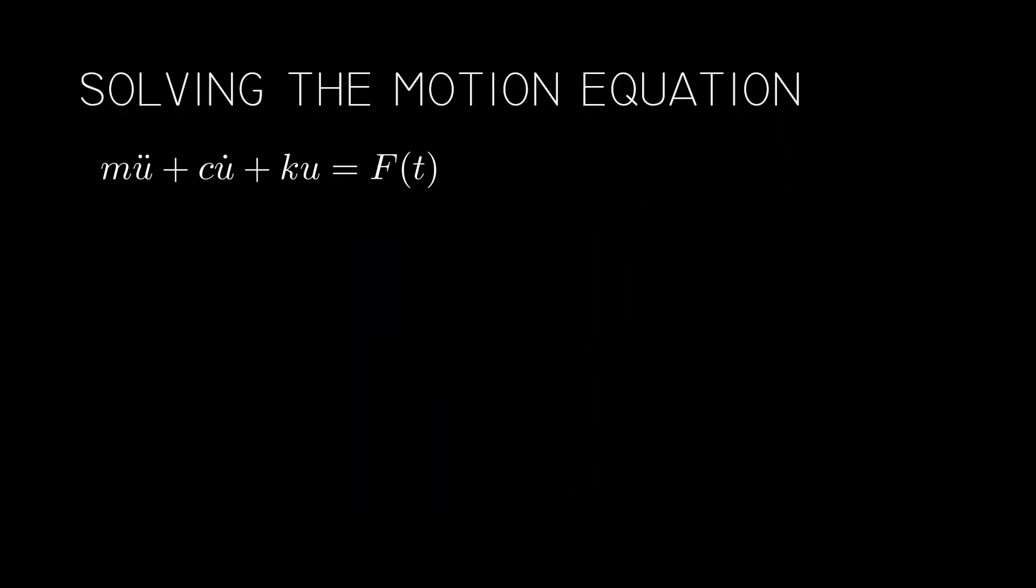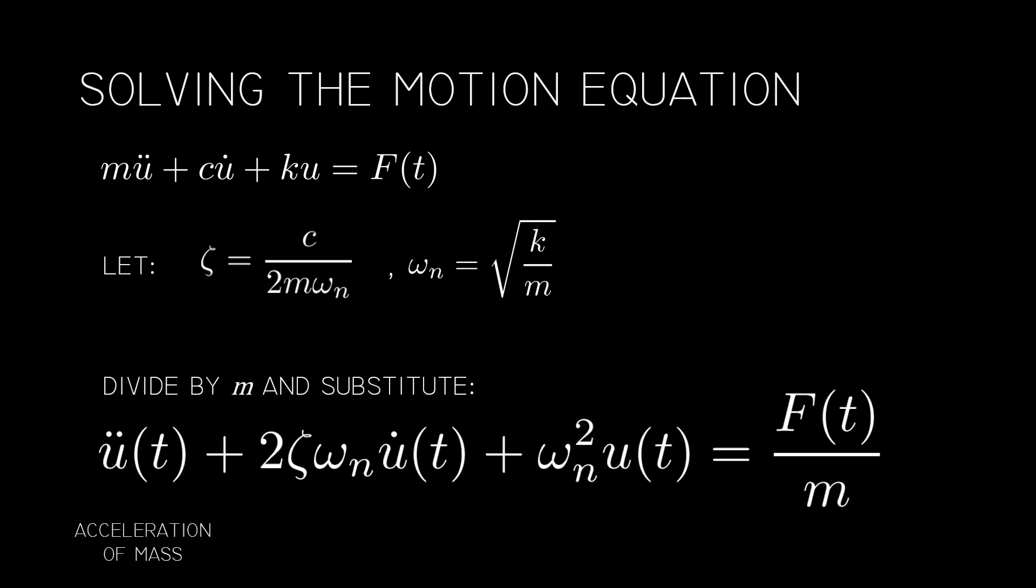To solve this, we usually express it in terms of zeta and omega, the damping factor and the natural frequency, respectively. If we divide everything by the mass m and substitute these two, which I encourage you to try for yourself and I'll give you a second to pause now, the equation is changed to the acceleration side of things. Now it's a bit easier to solve.